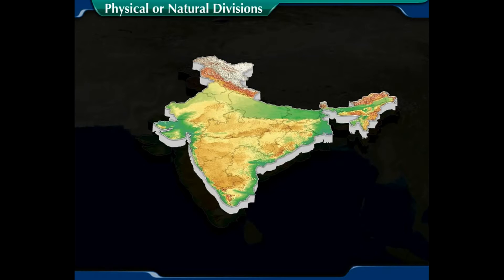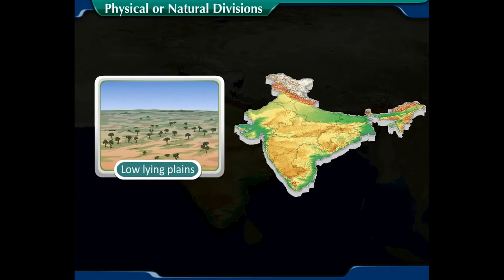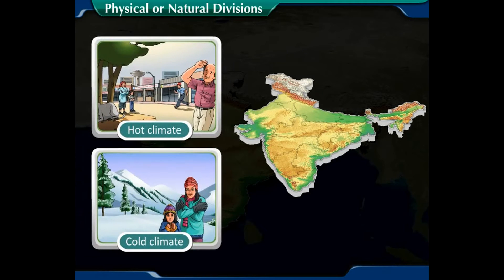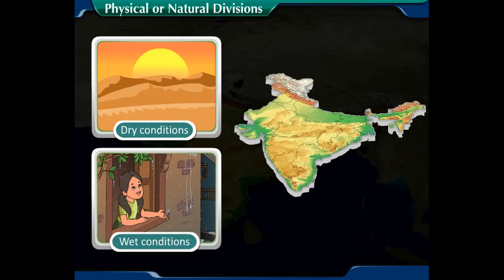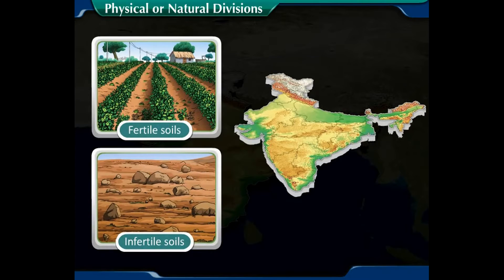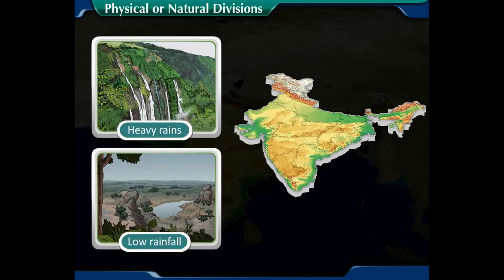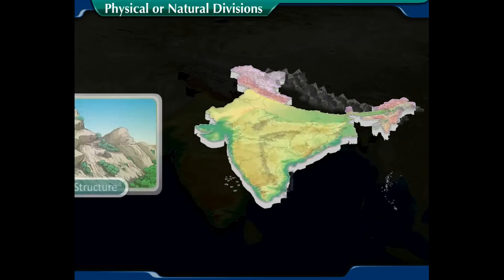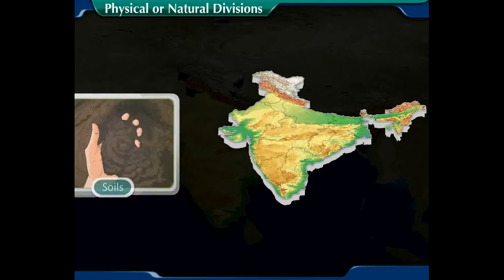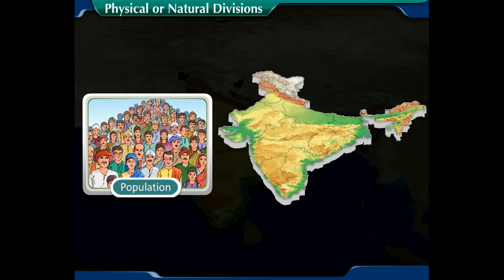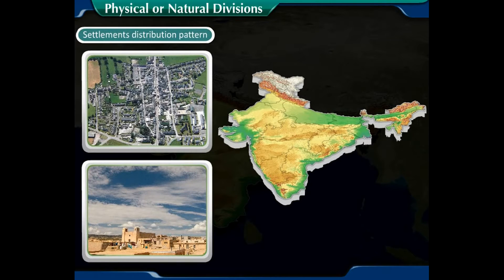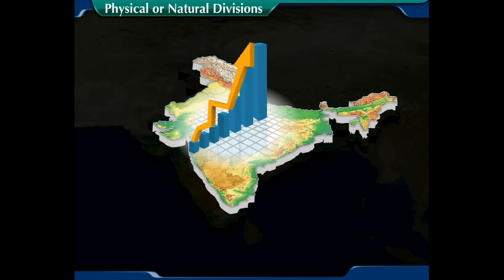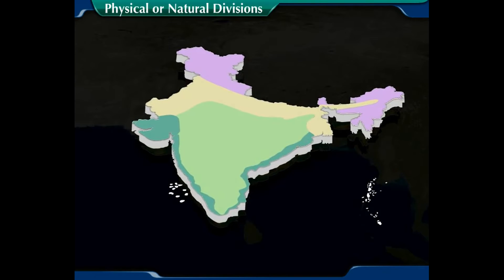The characteristics of these regions include: A) very high relief, B) low-lying plains, C) hot and cold climate, D) dry and wet conditions, E) fertile and infertile soils, and F) heavy rains to low rainfall. However, there is some similarity within this diversity. India can be grouped into five macro divisions and subdivisions on the basis of structure, landforms, climate, soils, natural vegetation, population and settlement distribution, cultural aspects, and economic development.